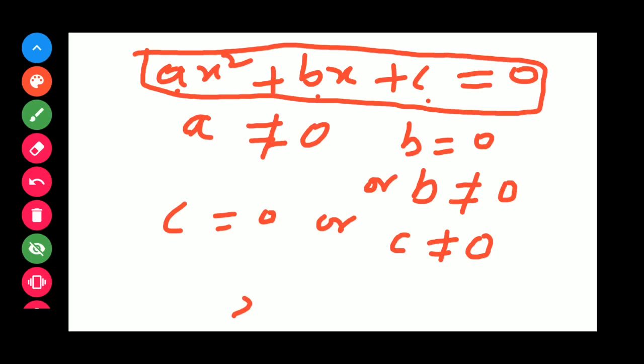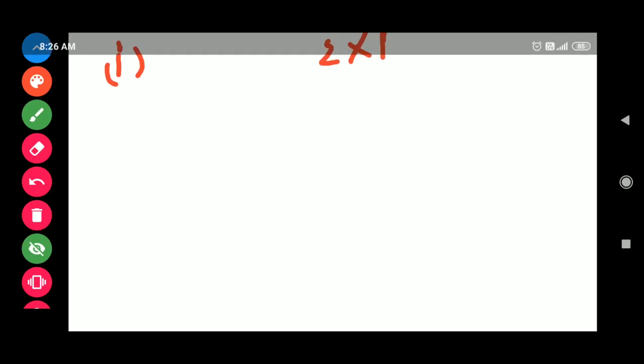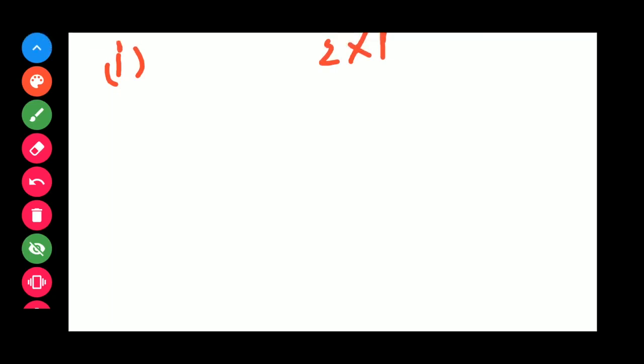Now, let's come to Exercise 1. The task is to choose the correct quadratic equation. You can see the first part of this exercise. The first question is given as x² - 3x = 0.